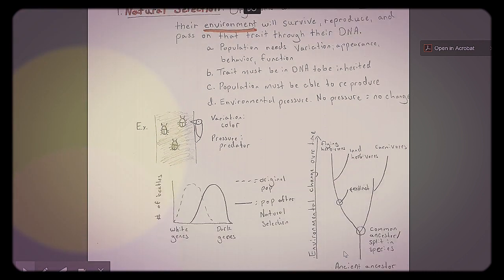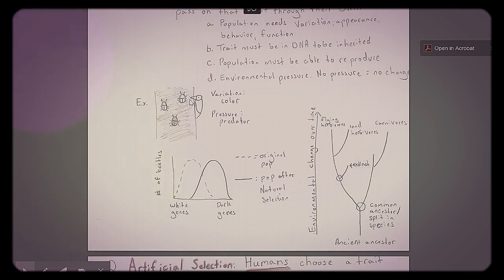And so there's a few examples here. Here's just an example with some beetles. It kind of goes with the, they're a little easier to draw than moths. But the light-colored beetles are going to be eaten. The dark ones survive and reproduce. So the variation was the color. The pressure, the predator, the pressure in this situation was the predator. And so it changes. And oftentimes these graphs are used to represent these changes. You have the original population with more white or light-colored genes. And then after the selection, the population shifts to more dark-colored genes.